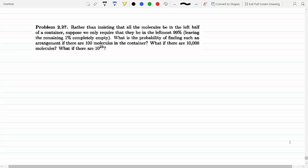Rather than insisting that all the molecules be in the left half of the container, suppose we only require that they be in the leftmost 99%, which means there's 1% empty. What is the probability of finding such an arrangement?